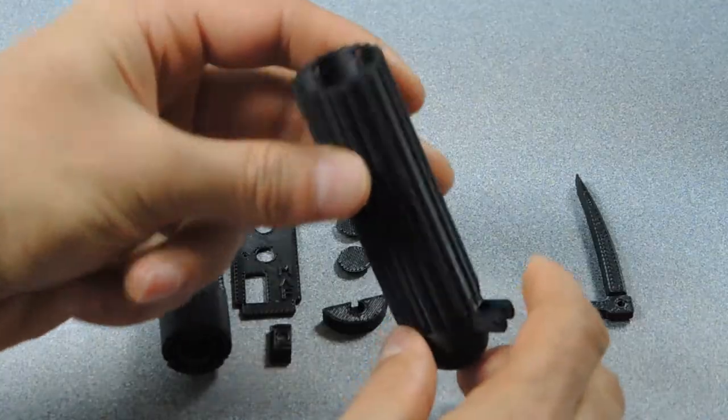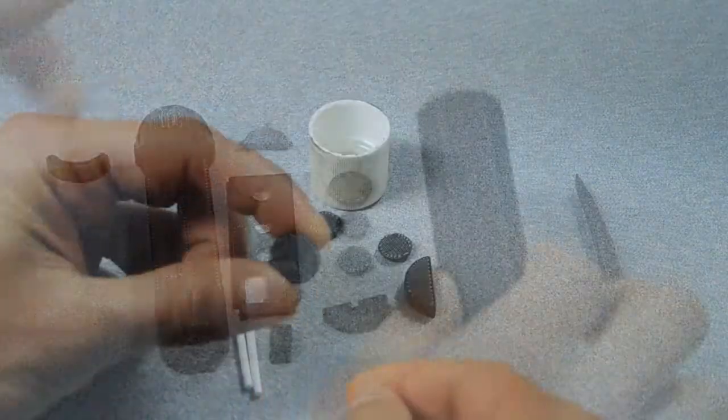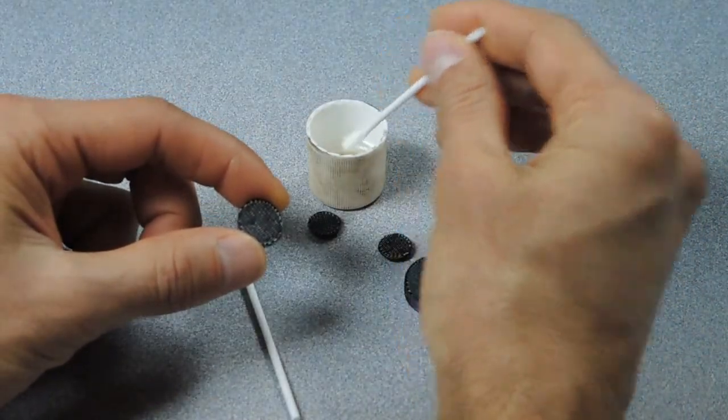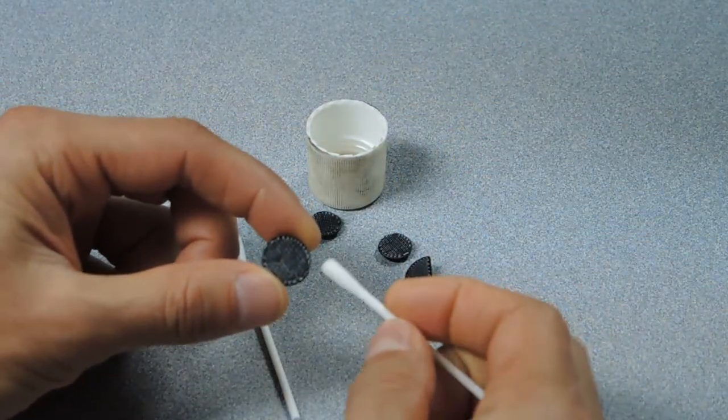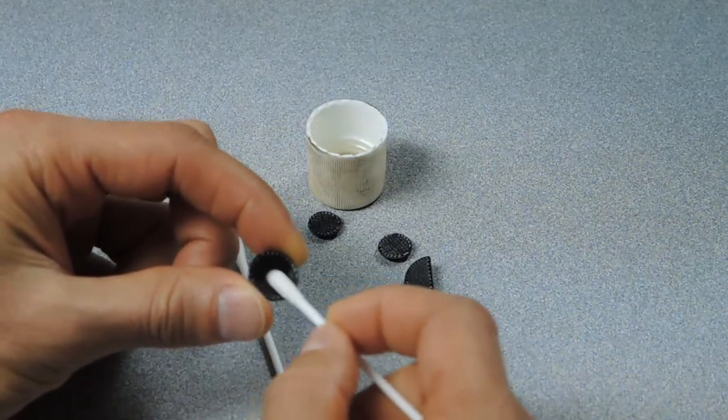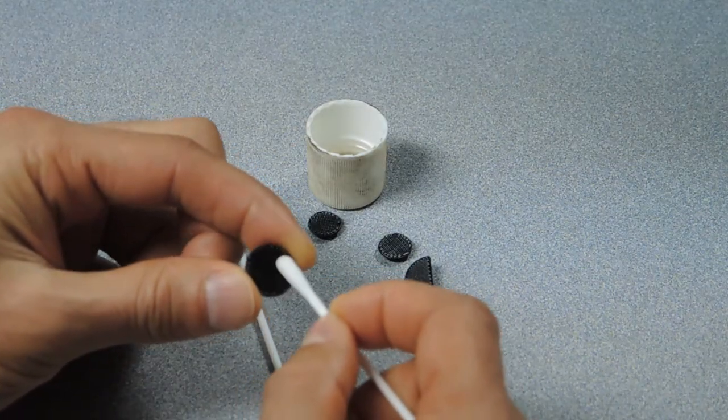Here I'm just taking a little bit of acetone and rubbing it over areas that either had support or didn't build so well. And that basically will just clean up some of these build artifacts.